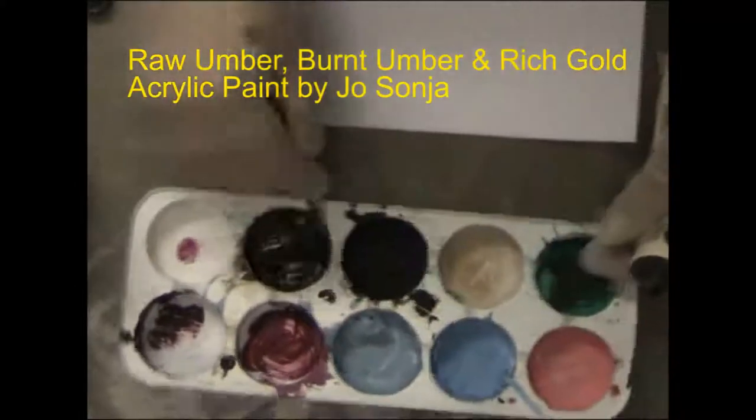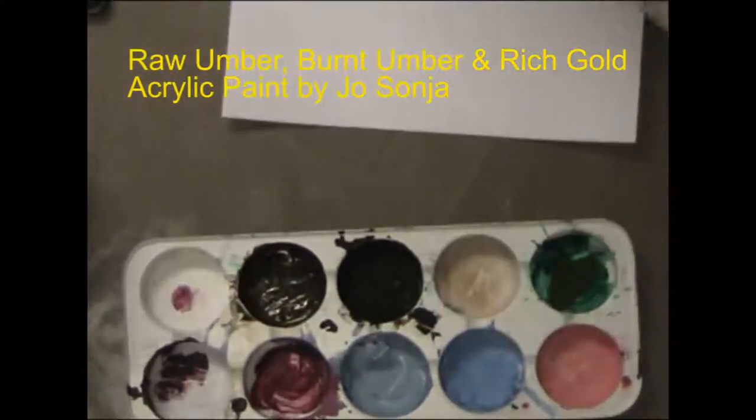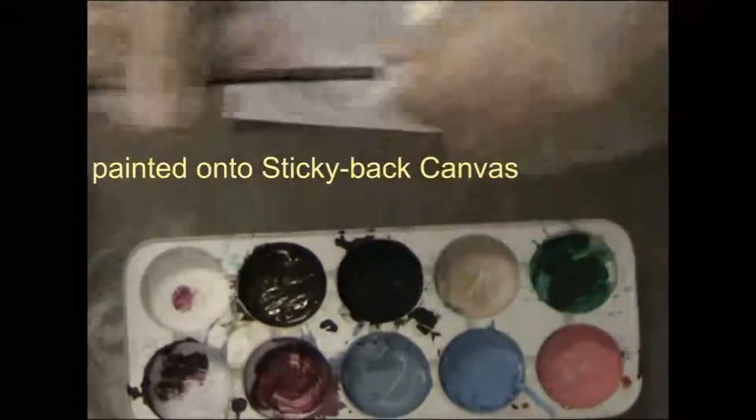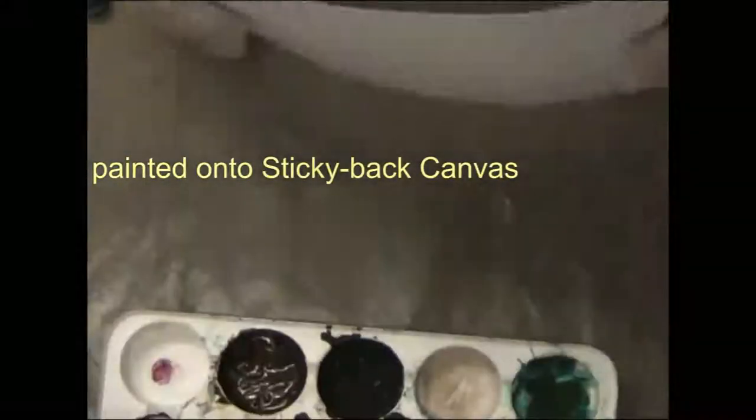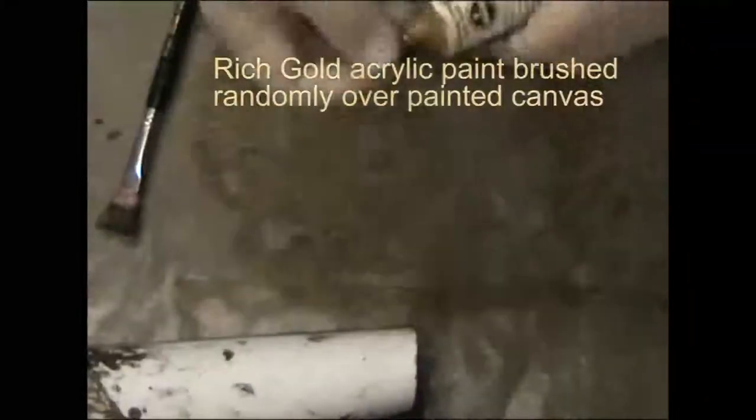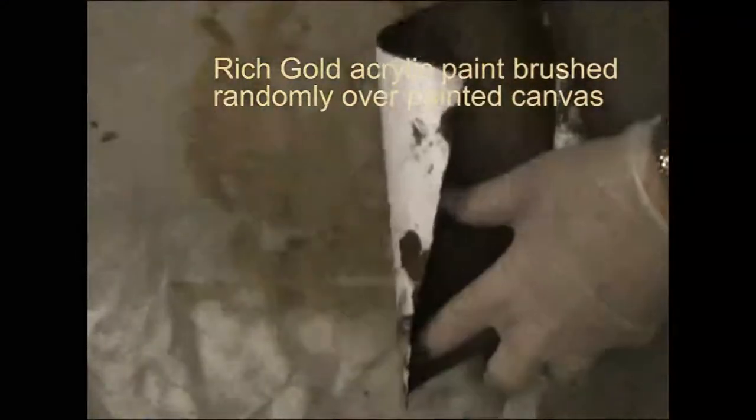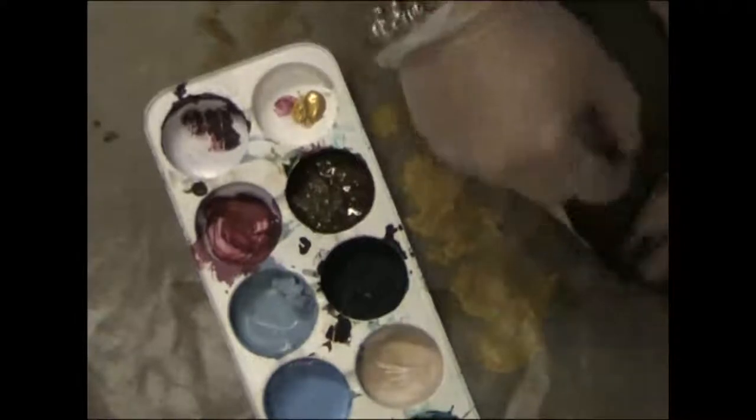Hi ladies, Jenny here with part one of my mini series on my vintage mini album for Ruthie. I've just taken some sticky back canvas and am painting it with some raw umber and burnt umber acrylic paint mixed with some gold acrylic paint. I've just painted that whole piece of canvas with that mixture.